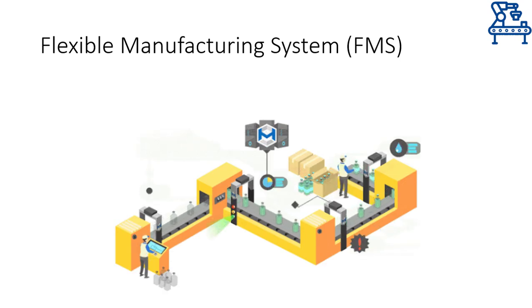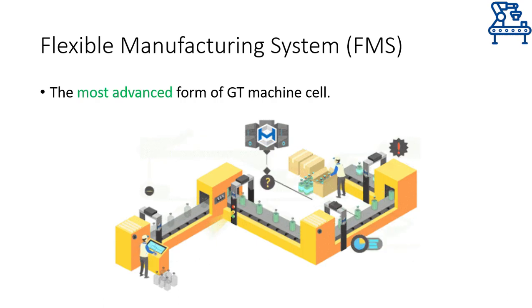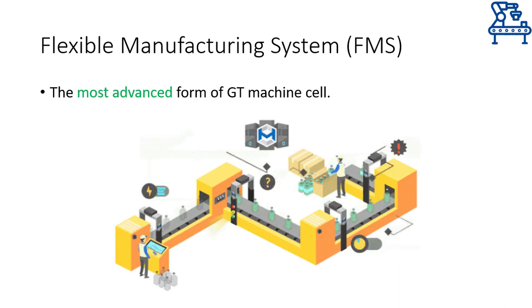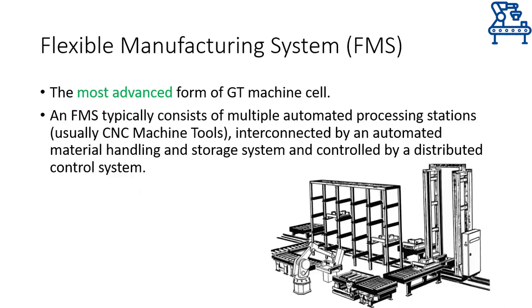I ended the previous video with a note that the most advanced form of group technology is flexible manufacturing system, or for short FMS. An FMS usually consists of automated workstations grouped in the form of a machine cell, incorporating fully automated material handling as well.